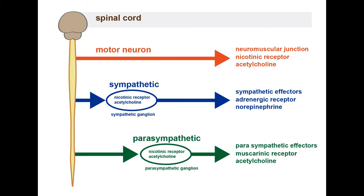As we know from the previous lecture, the autonomic nervous system is divided into sympathetic and parasympathetic nervous system. In the autonomic nervous system, brain-to-organ signals use two neurons: the pre-ganglionic neuron and the post-ganglionic neuron. The details of which neurotransmitters are released and which signals are processed will be covered in this video.